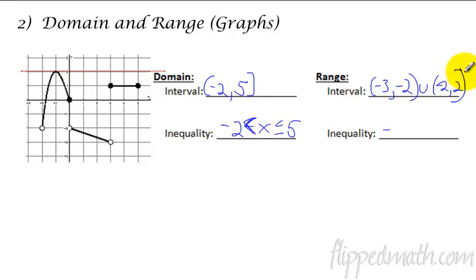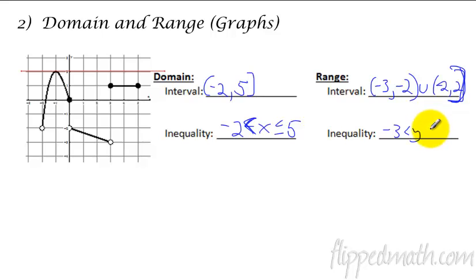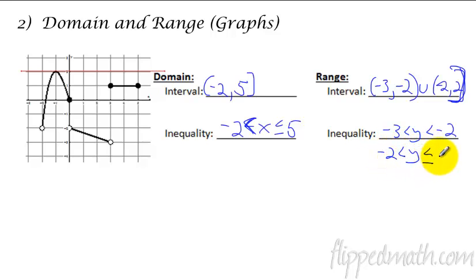That last bracket should be a bracket — that's a bracket at 2. The inequality: negative 3 is less than y — because I'm doing range — which is less than negative 2. And then I also have from negative 2, which is less than y, less than or equal to positive 2. There's your domain and range off the graphs.